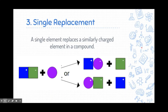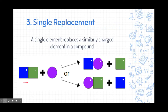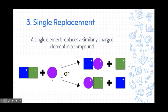Our third type is called a single replacement reaction. To remember this one, I like to think of a dance. We have a reactant where two substances are dancing with each other — that's an ionic compound, so it's a positively and negatively charged pair. Then we have a single element, the wallflower, that really wants to dance. Depending on whether it's positively or negatively charged, it's going to go ask one of the two partners to dance with it. So a single element replaces a similarly charged element in a compound.